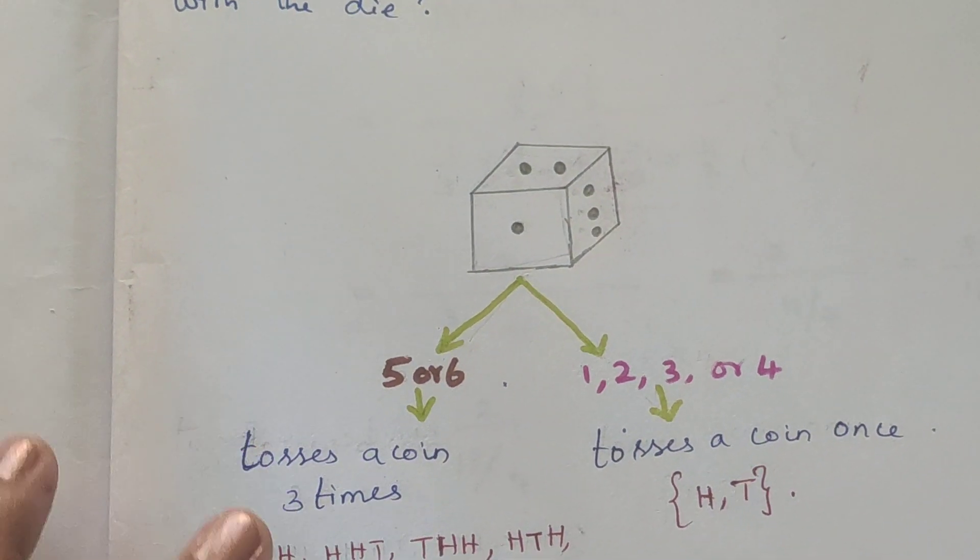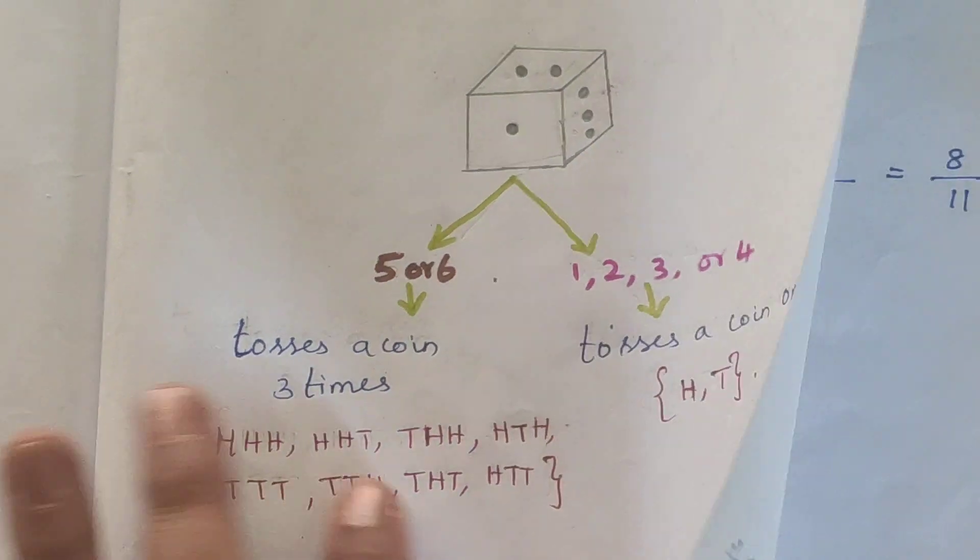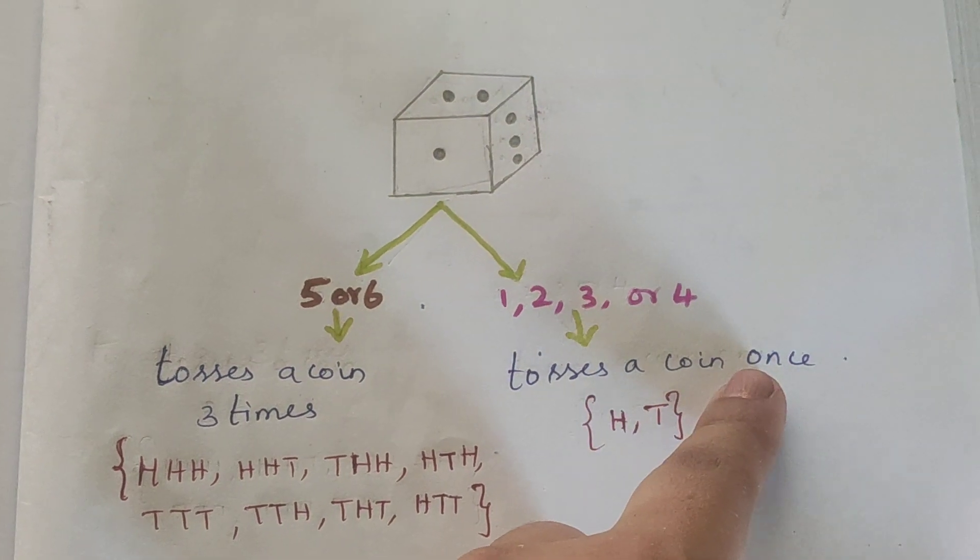If we have a coin tossed 3 times, then we have a sample space with 8 outcomes. So this is our situation.